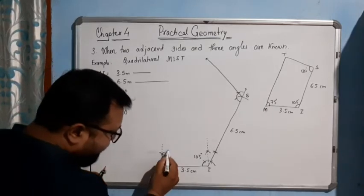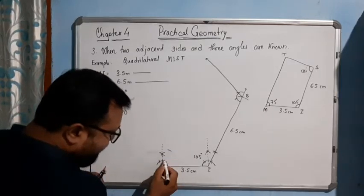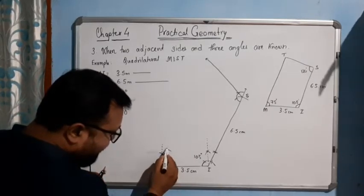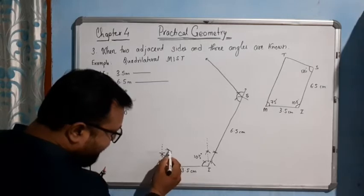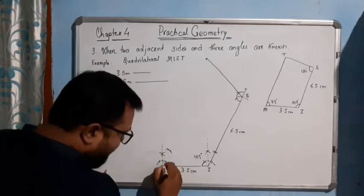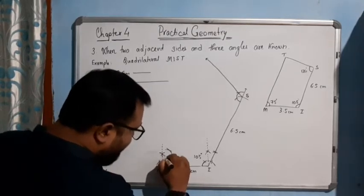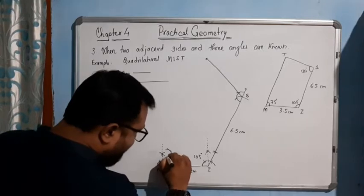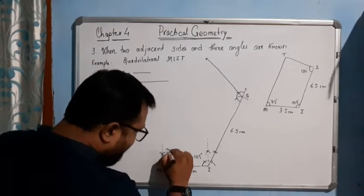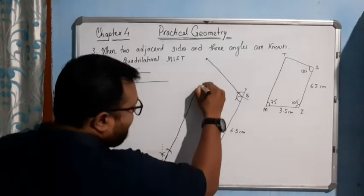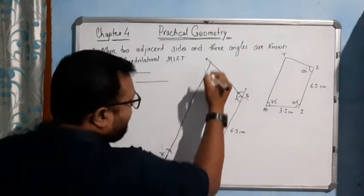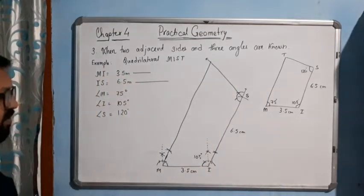Place the pin here and put one cross mark. Place the pin here and put another cross mark. This is the intersecting point. If you join this line in this way, it will give you a straight line.